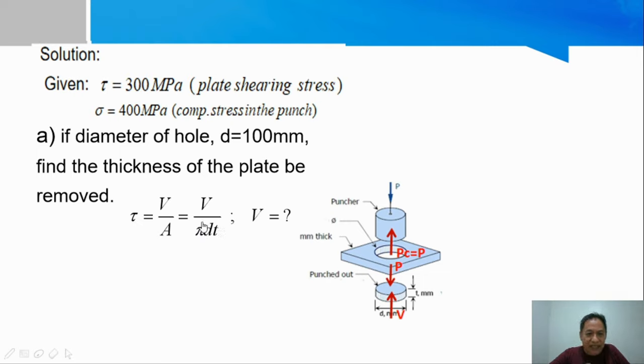In the shearing stress formula there is a force V over A. The area will involve the thickness. Let us try to consider instead if we go with the compressive stress - the compressive stress will depend on the applied force P and the cross sectional area of the puncher. That means it does not include the thickness.